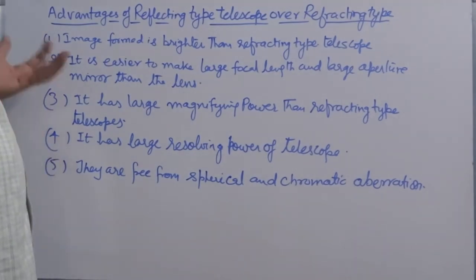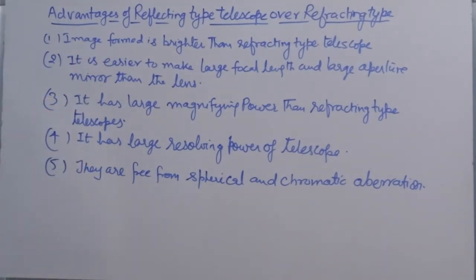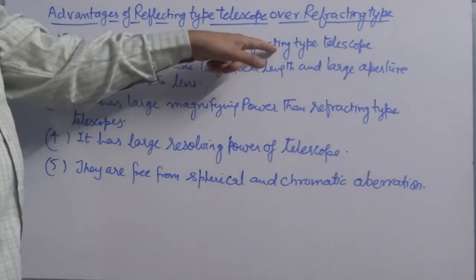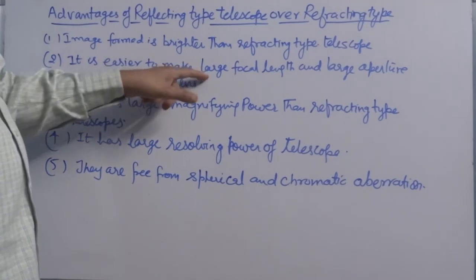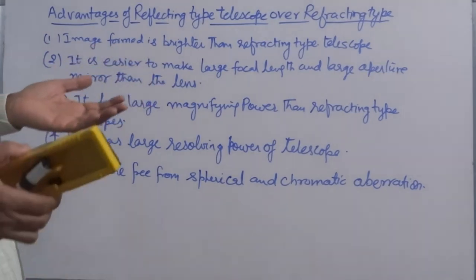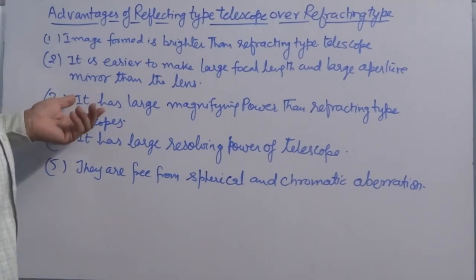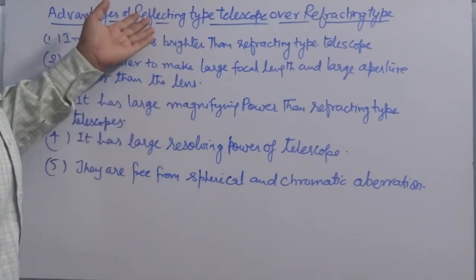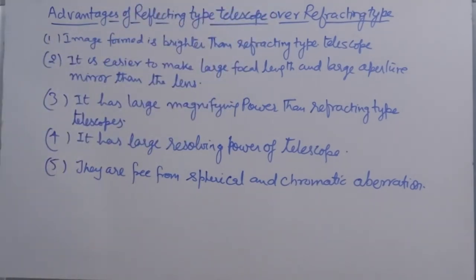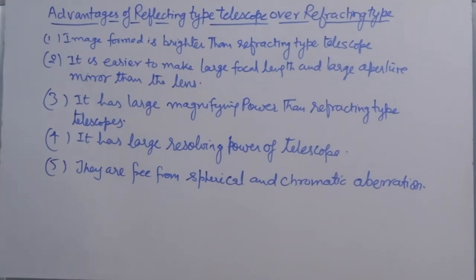Now what is the difference — which one is better? The advantages of reflecting type telescopes over refracting type are: the image formed is brighter; it is easier to make a mirror of large focal length and large aperture than a lens; it has large magnifying power — much higher than the refracting type; and it has large resolving power — also better than the refracting type.